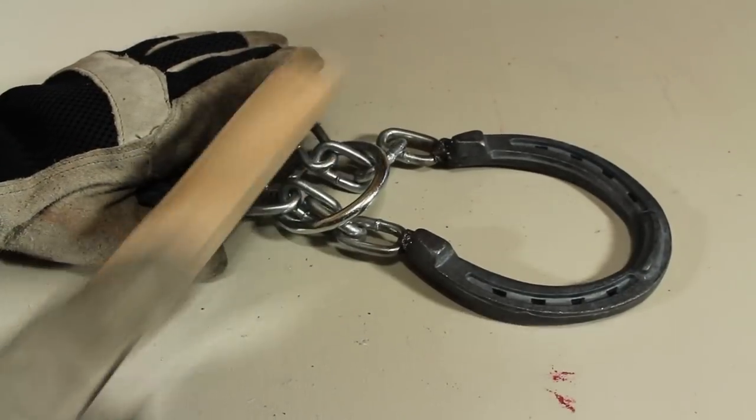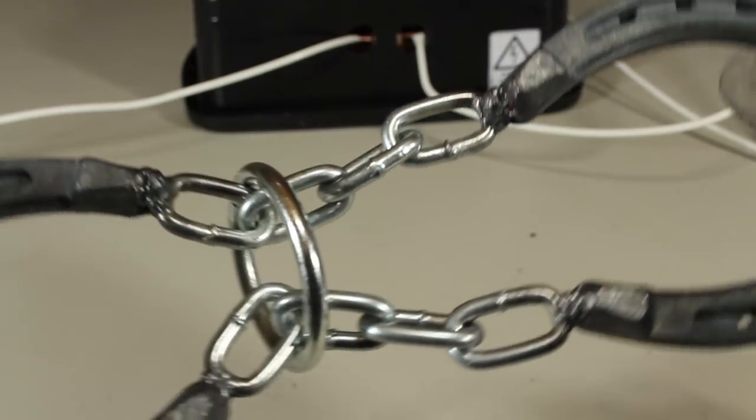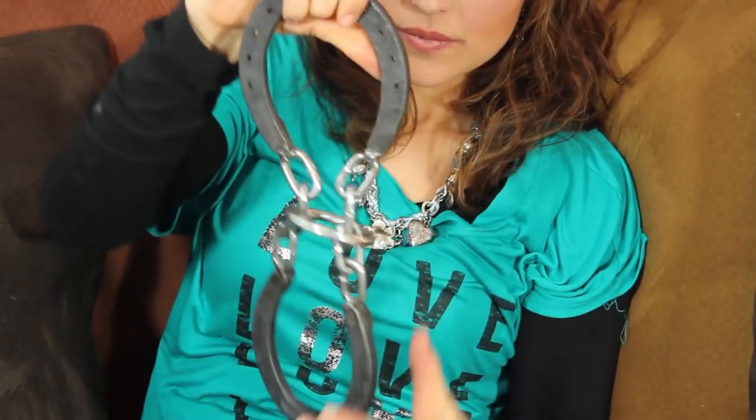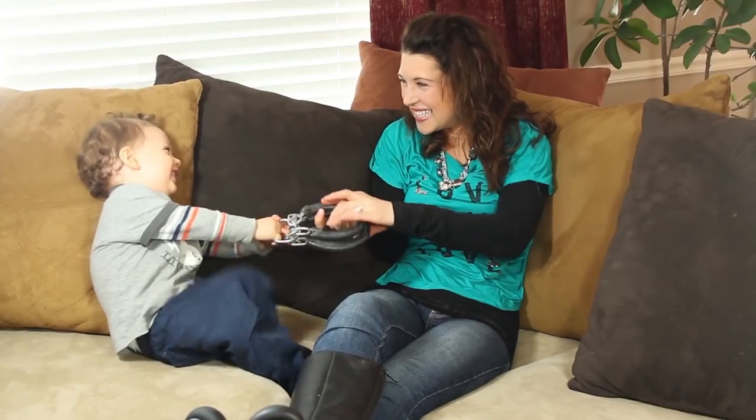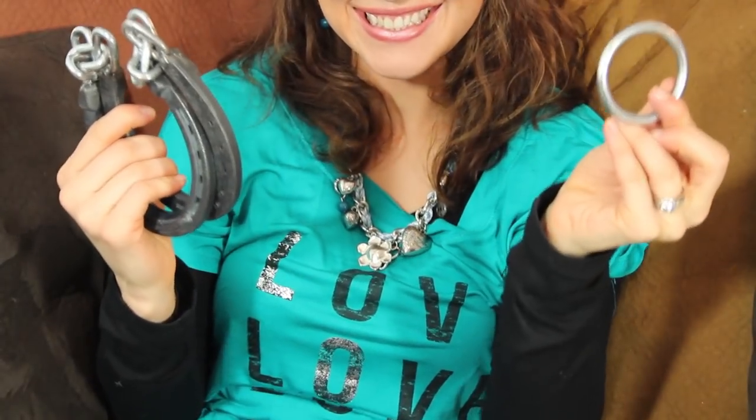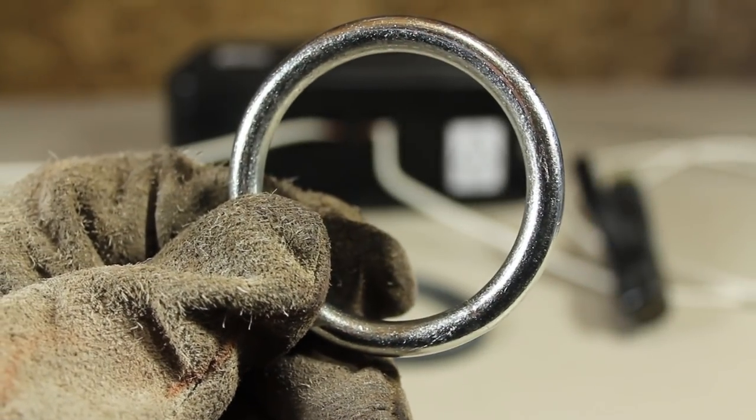We can clean up the welds in the usual way, and look at that, we've got a horseshoe puzzle ready for entertaining. The challenge is to get the ring off, which seems impossible because the ring is way too small. But it can be done, and my wife just proved it. Why don't you make your own and see if you can figure out how it's done.